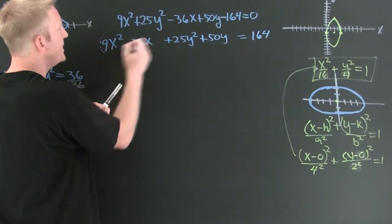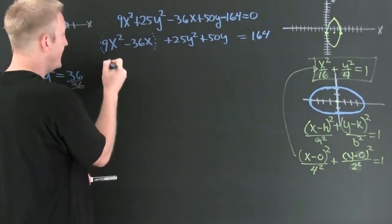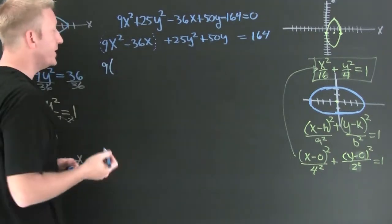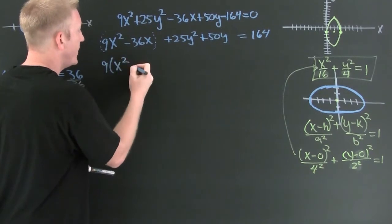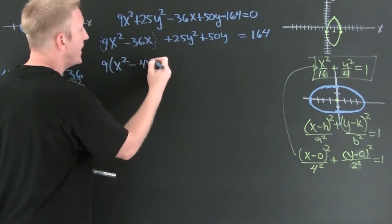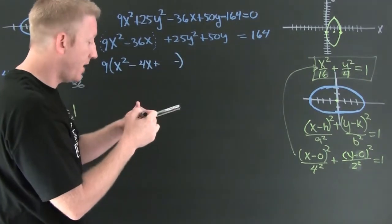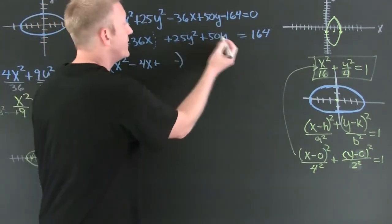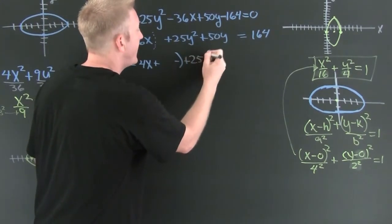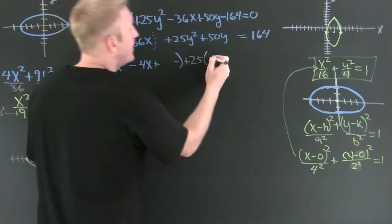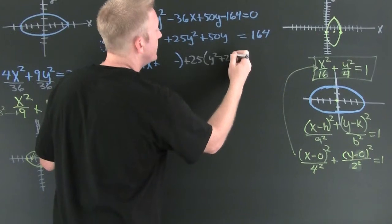So now I want to pull out that 9. Why? Because in completing the square you want the leading coefficient to be 1. So then I have x squared minus 4x and then here I'm gonna add and subtract the same thing. I'm gonna do the same thing over here to the y. I want my leading coefficient to be 1 so I'm pulling out that 25. And then left on the inside I'm gonna have y squared plus 2y.